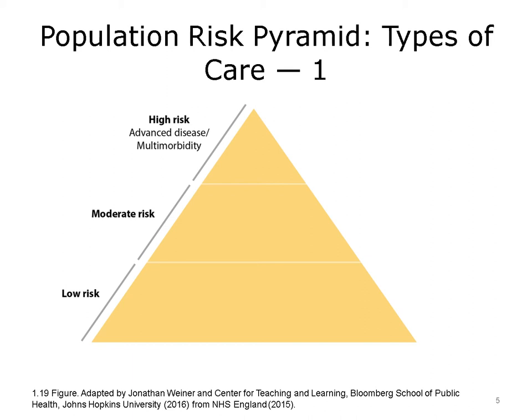The depicted version of the risk pyramid is an interesting one adapted from the National Health Service in the UK. Here, everybody in the population fits into one of the three levels of the pyramid. And generally, it is best not to focus only on a single disease or group of diseases, because few human beings have only a single disease. They generally have multiple morbidities.